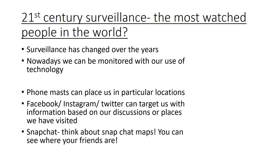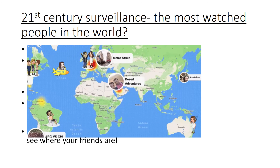If you think about Snapchat maps — for those of you who have Snapchat — you can actually see where your friends are. So that's a form of surveillance in itself. With our use of technology nowadays, we all have a technological blueprint so to say, and we are in a way the most watched people in the world nowadays. There's an example there of the Snapchat maps.